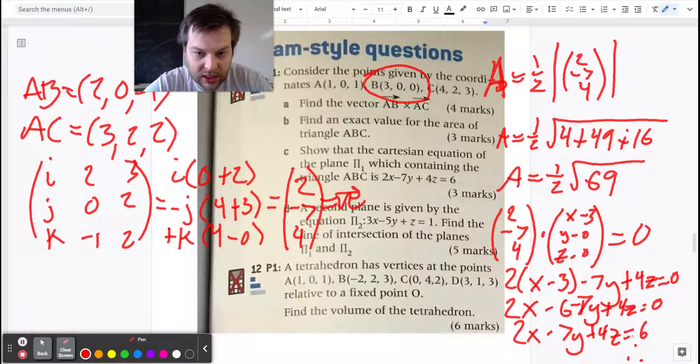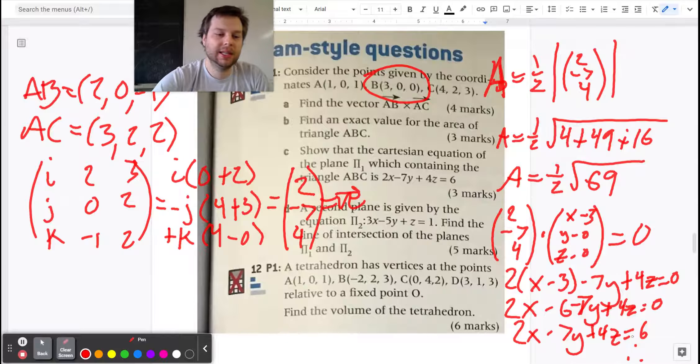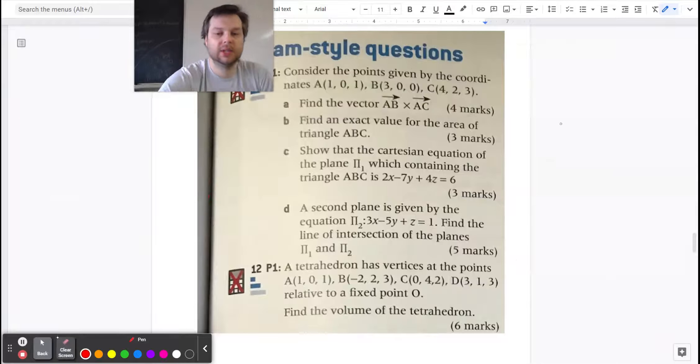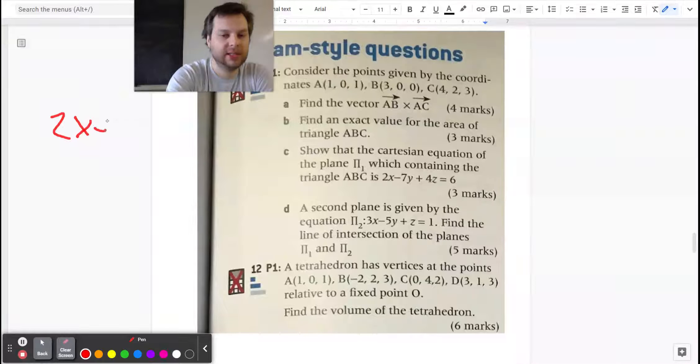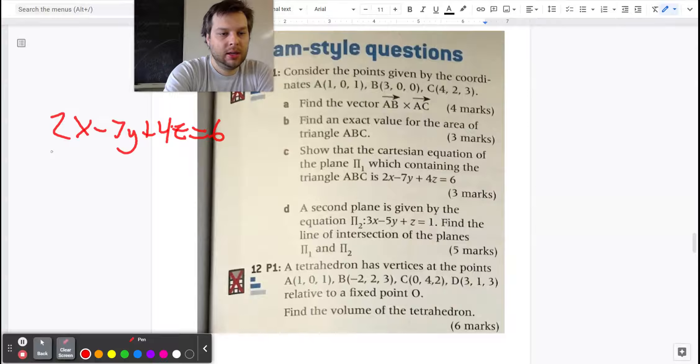The second plane is given by a second equation. Find the line of intersection of those two planes. Okay, so I'm going to delete everything because I don't need any of those answers anymore. So when you have two planes they're going to intersect in a line, unless they're parallel.